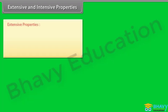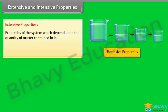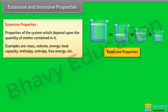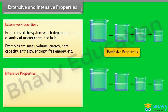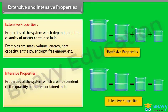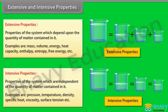Extensive and intensive properties. Extensive properties: properties of the system which depend upon the quantity of matter contained in it. Examples are mass, volume, energy, heat capacity, enthalpy, entropy, free energy, etc. Intensive properties: properties of the system which are independent of the quantity of matter contained in it. Examples are pressure, temperature, density, specific heat, viscosity, surface tension, etc.